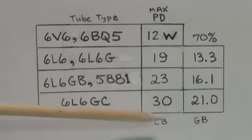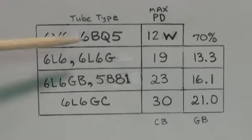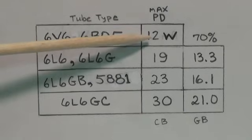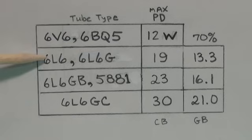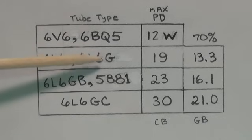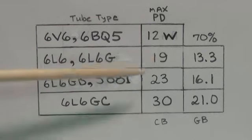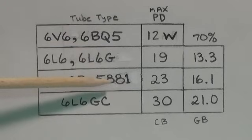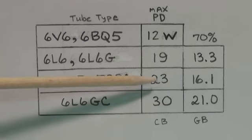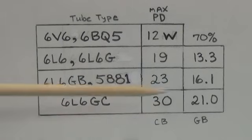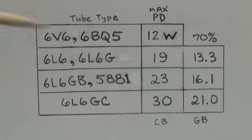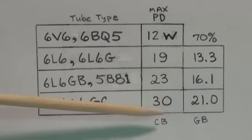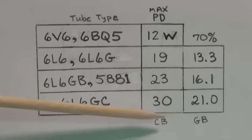6V6 or 6BQ5, known to some as EL84s, it's 12 watts. The metal 6L6s, or 6L6Gs, which are the great big globe 6L6s, about 19 watts. 6L6GB, which is a little smaller, or 5881, which is smaller yet, 23 watts maximum. And 6L6GCs can stand a whopping 30 watts. Now, this is maximum. You can actually bias this hot if you want. I generally go a little under it just to play it safe.